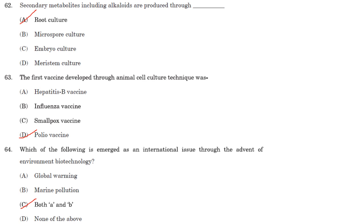The first vaccine developed through animal cell culture technique was the polio vaccine. Answer is option D.